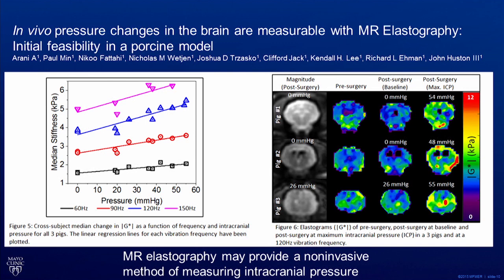Recently, Dr. Huston and his colleagues have explored the possibility of using MR elastography to detect raised intracranial pressure. They used a porcine model and placed a catheter in the ventricles to change intracranial pressure. Increasing the pressure resulted in stiffer brains, which can be seen here. The mean brain stiffness increased by about 25% from baseline and had a nice correlation with the intracranial pressure.